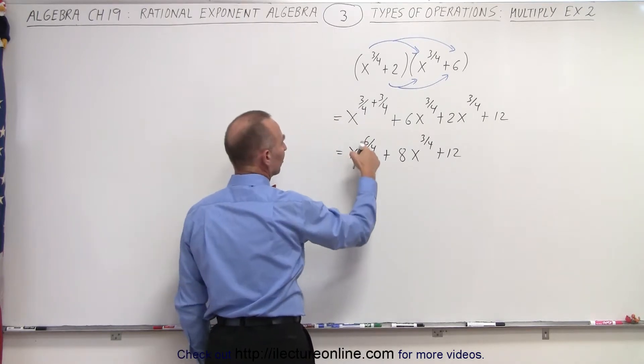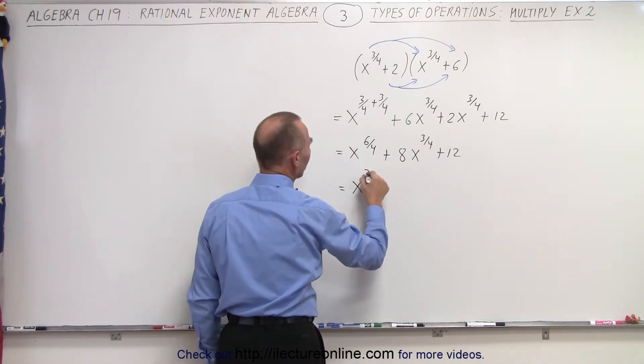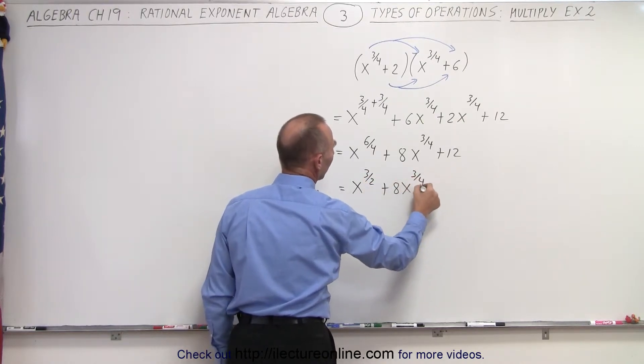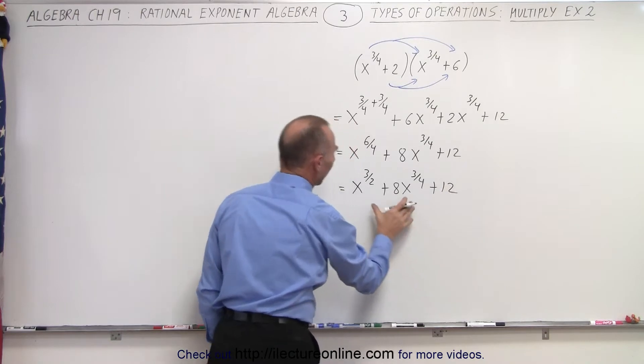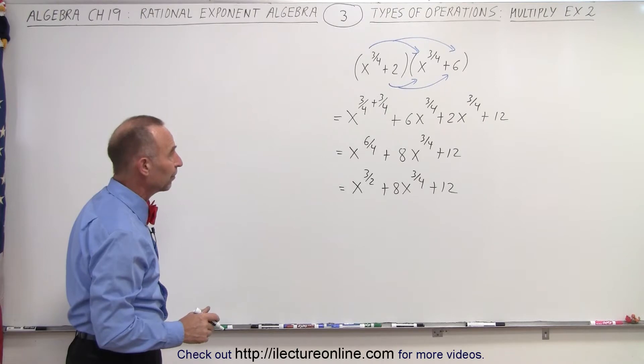And then finally, 6 fourths is the same as 3 over 2, so this is equal to x to the 3 over 2 plus 8x to the 3 quarters plus 12. And that would then be the product, the simplified product, of our original expression.